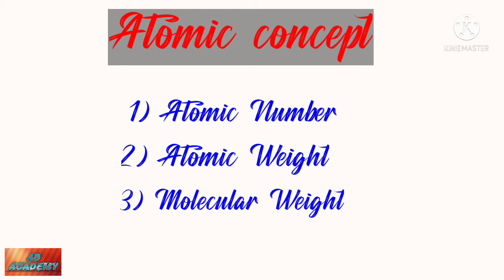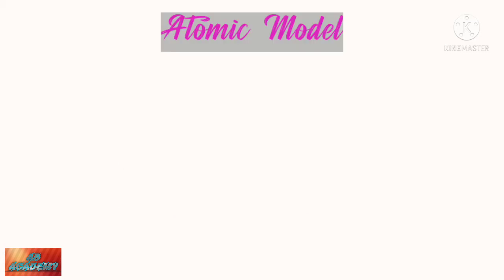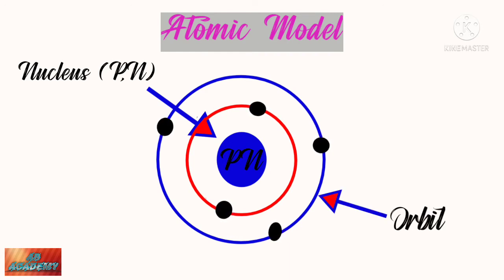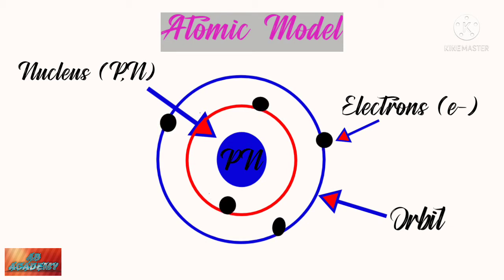Let's see the atomic model first. The nucleus is in the center with protons and neutrons in it. Protons are positively charged while neutrons are chargeless. Around the center there are different circles called orbits, and electrons revolve in these orbits. This is a simple atomic model.